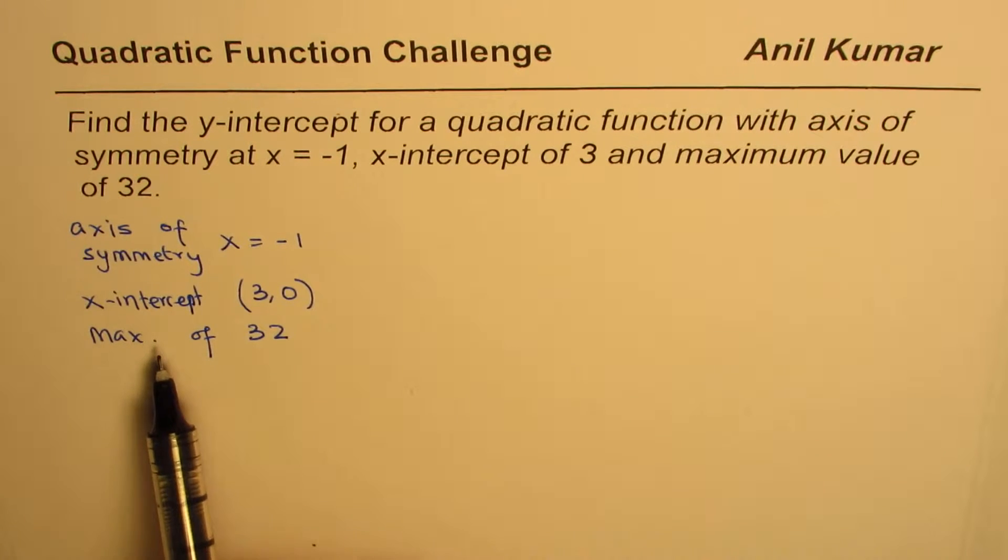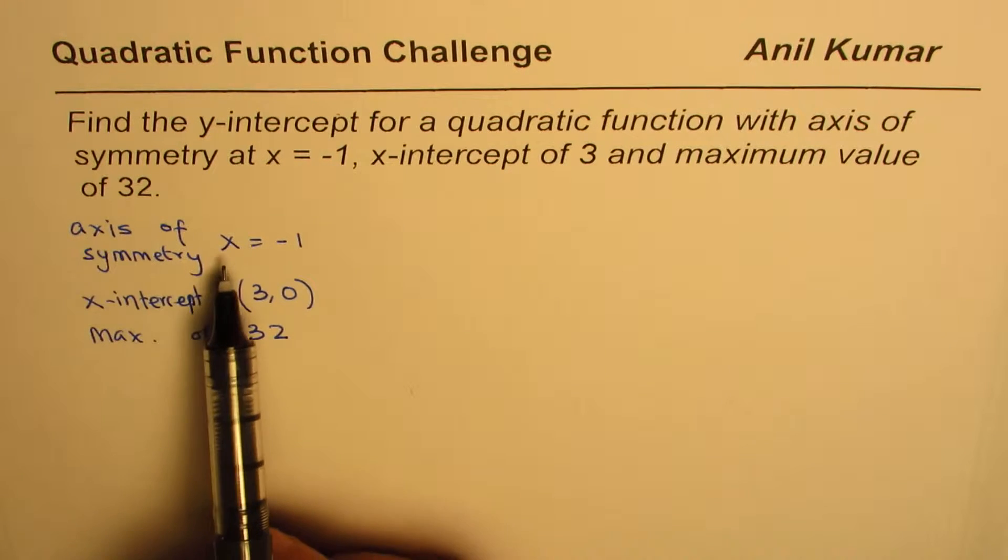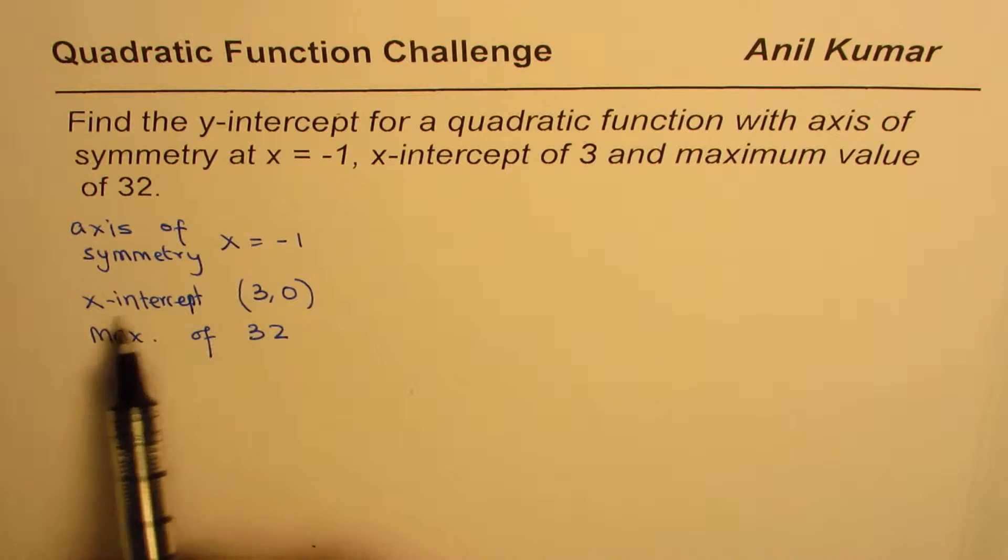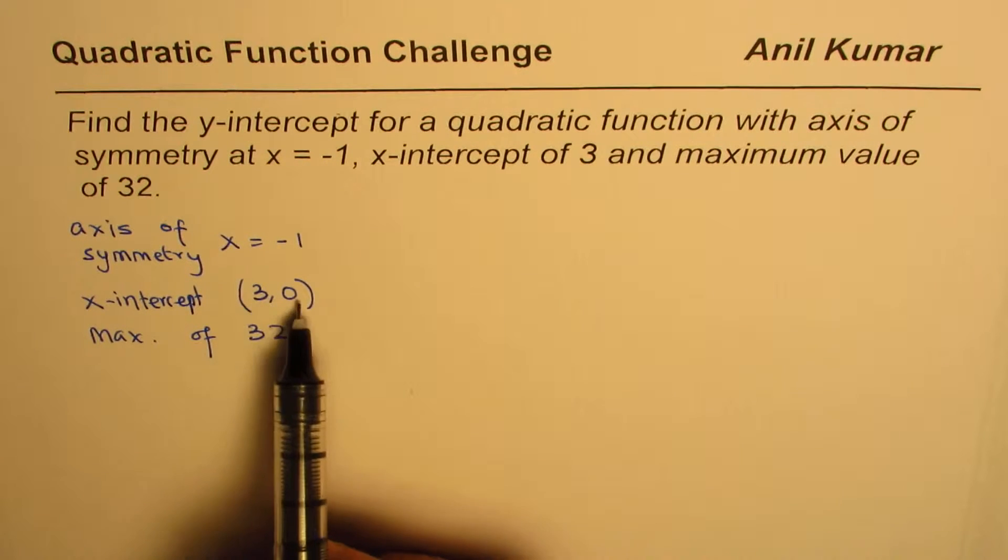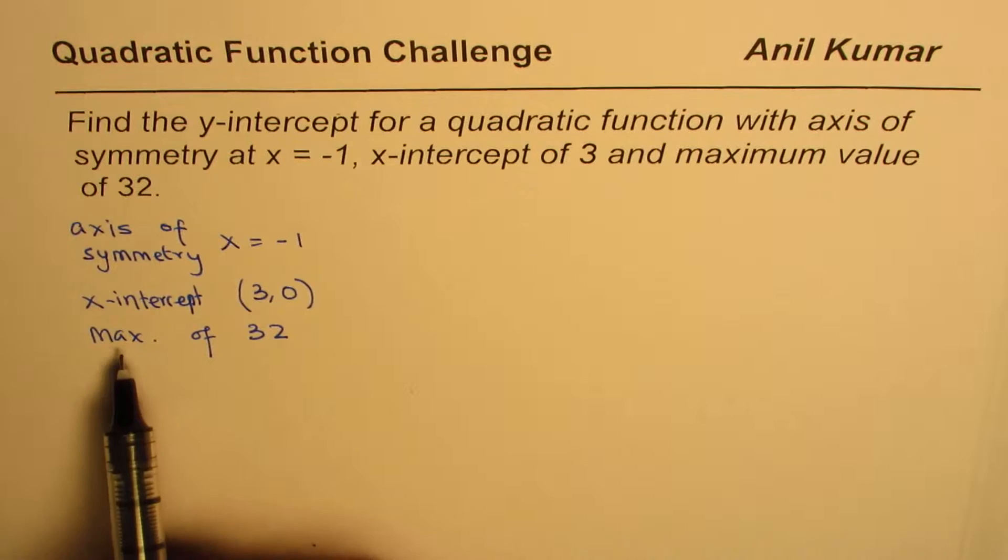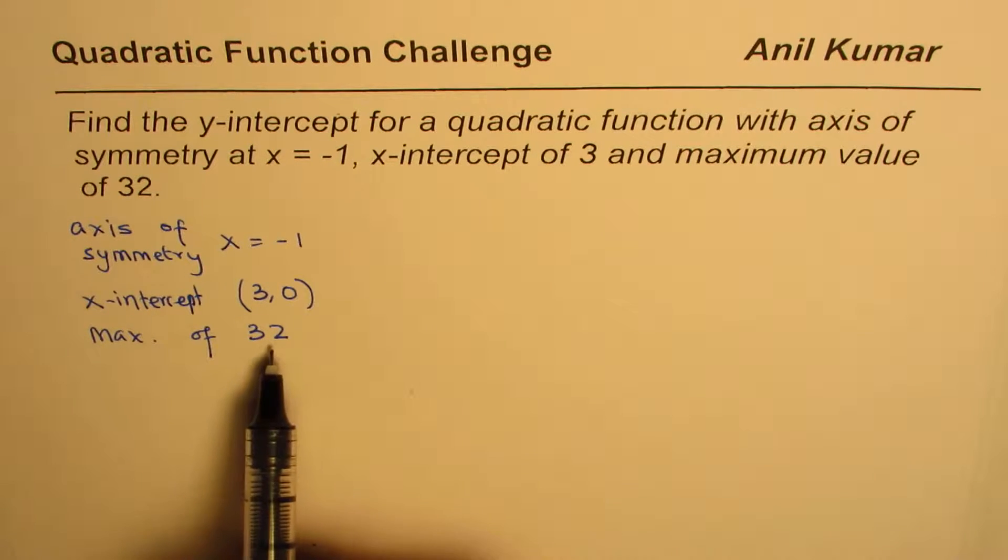So I've written down what is given to us: axis of symmetry x equals minus 1, x-intercept 3 (that means the coordinate point is 3, 0 with y value 0), and maximum of 32.